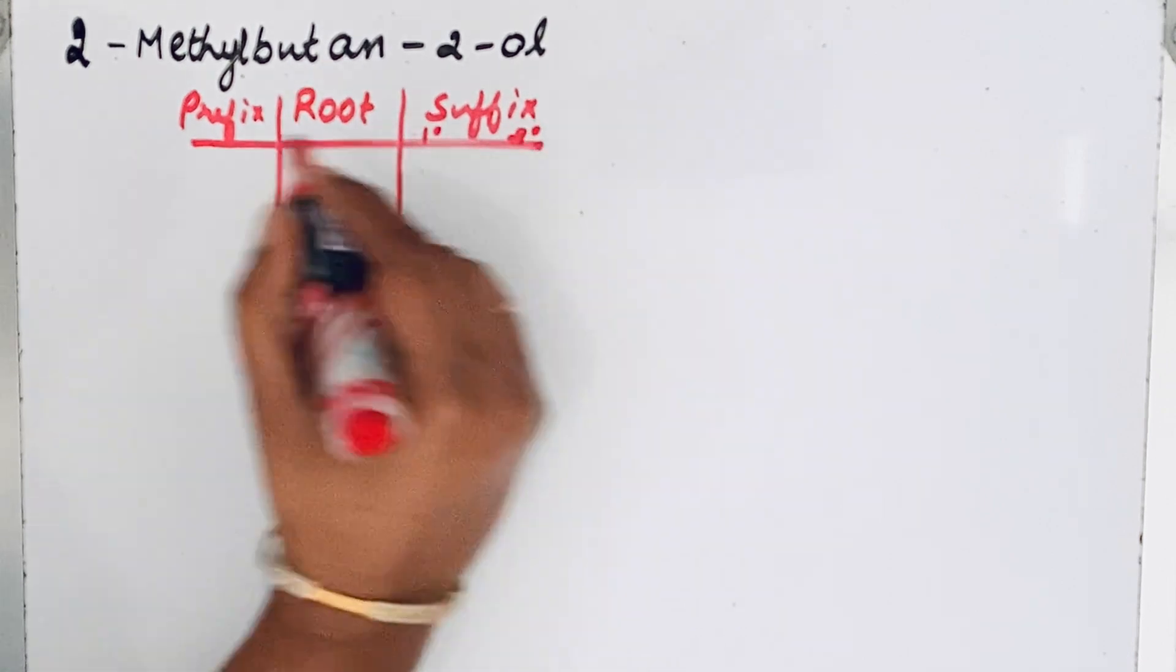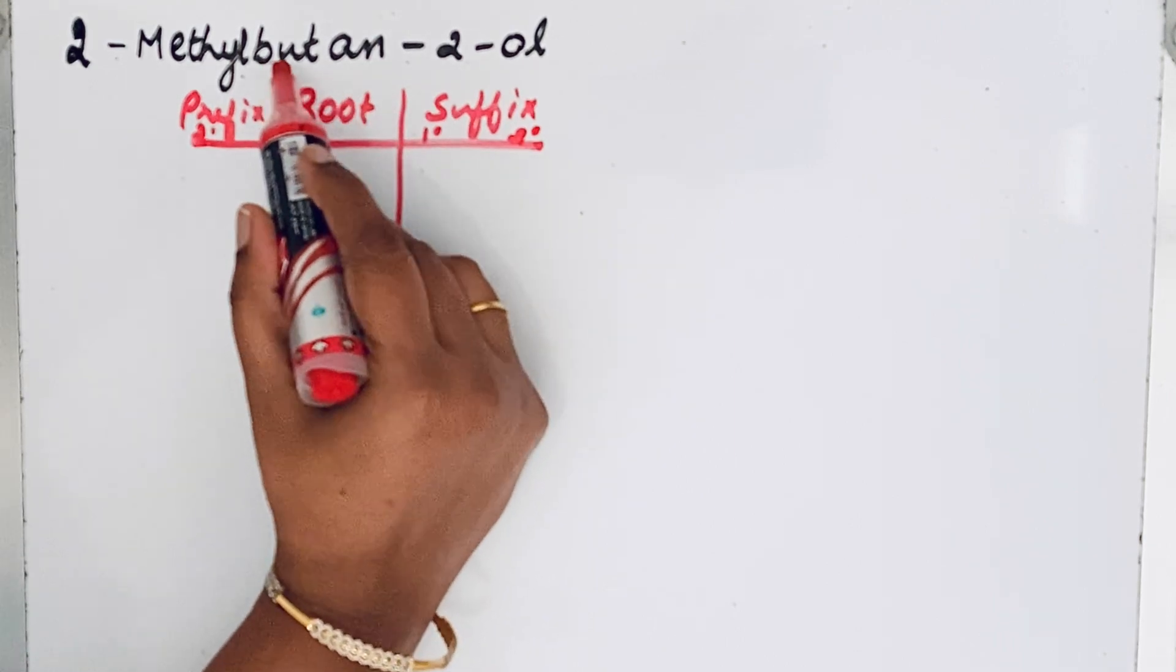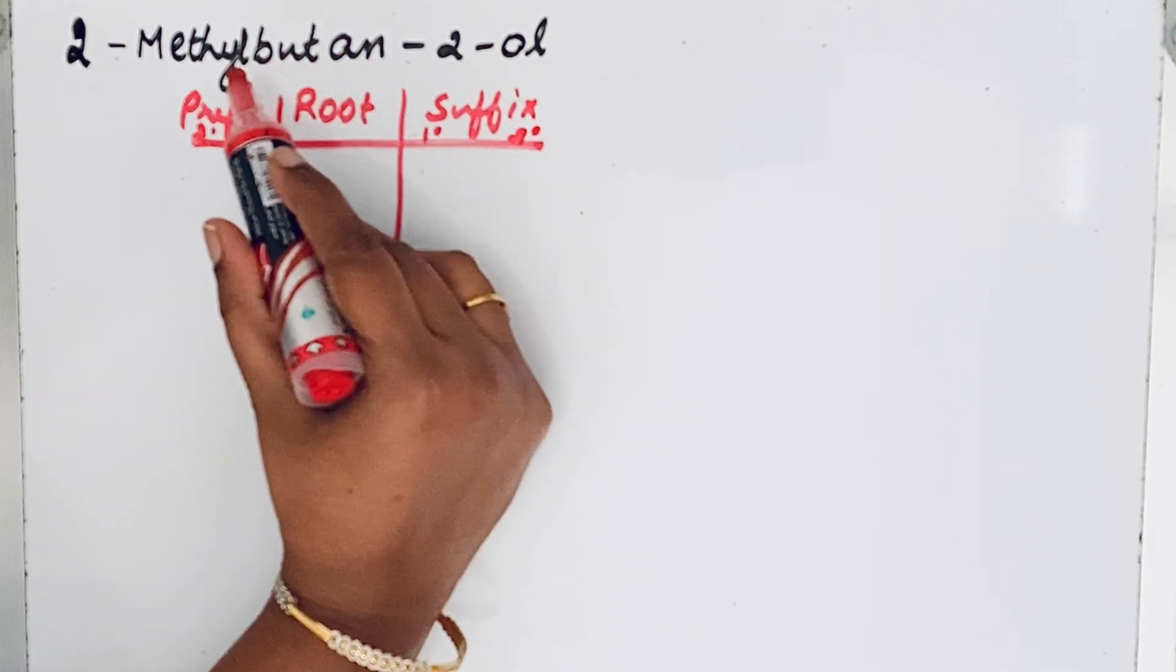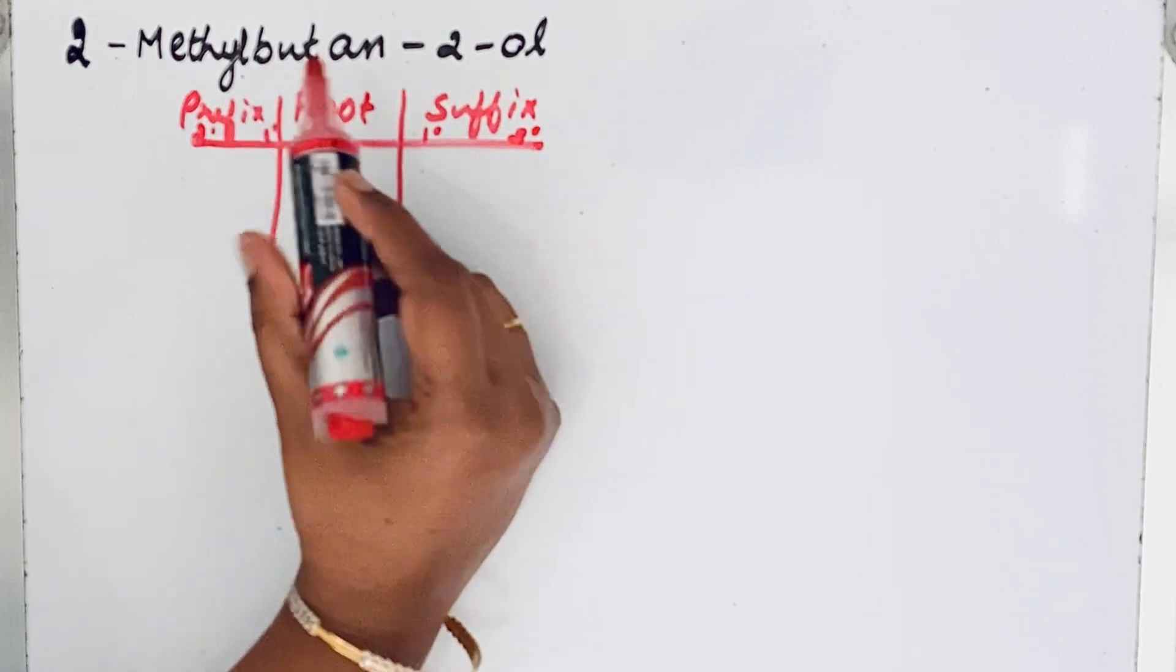Let us look at that IUPAC name 2-methylbutane-2-ol. So the root word is but.